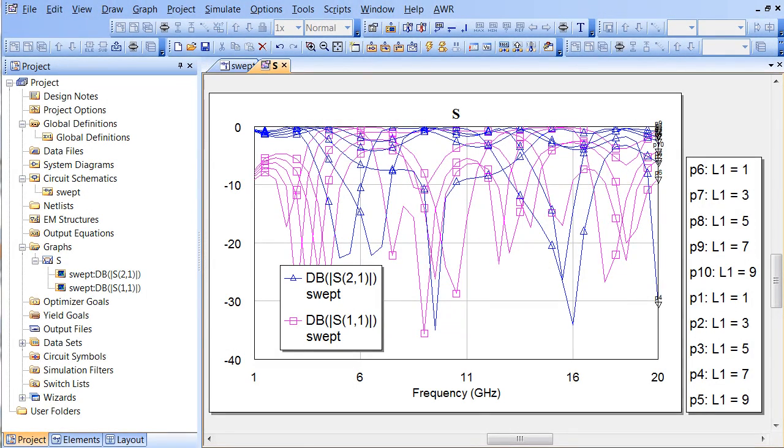In version 11, we've added a number of features to graphs to help make them easier to use, especially if you're using swept variables. This graph you see before you is for a filter.